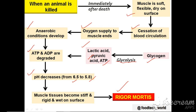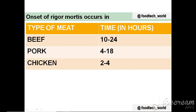The onset of rigor mortis occurs in beef within 10 to 24 hours, in pork within 4 to 18 hours, and in chicken within 2 to 4 hours.